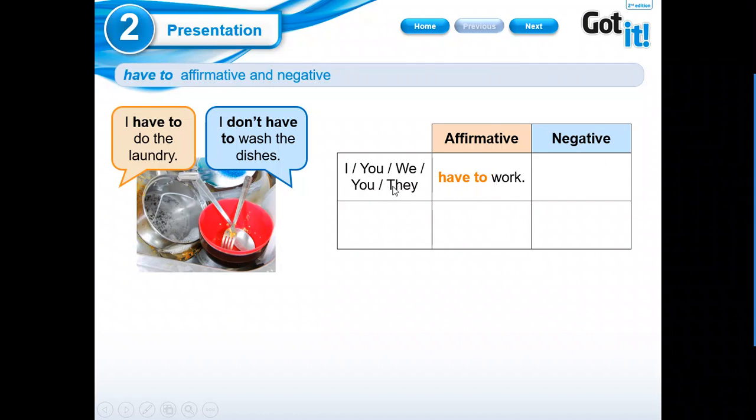So we're going to start with I, you, we, you, and they. I in affirmative sentence goes with 'have to'. Very good, have to. Y puede ser cualquier verbo, no solamente work. So I, you, we, you, and they have to work. In the negative form we're going to use 'don't have to'. Perfect. For example, they have to feed the dog, they don't have to clean the bedroom.